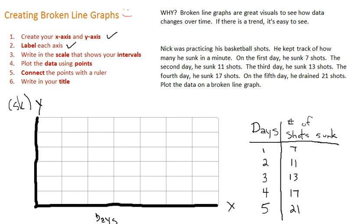On the y axis, it's the data that changes over time, and the data that changes on each day is the amount of shots sunk. So the number of shots sunk. And now I can start to put things into my graph.